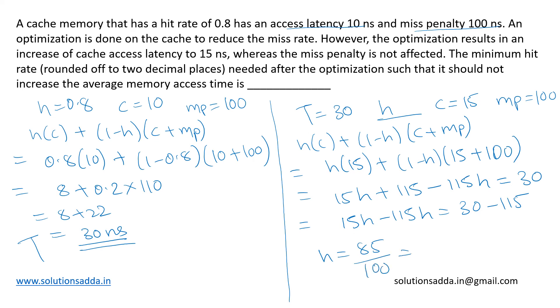So if we take the hit ratio in this case as 0.85 or 85 percent, then the average access time required for both the scenarios will be the same, which is 30 nanoseconds, and the hit rate we got is 0.85. That's the answer.